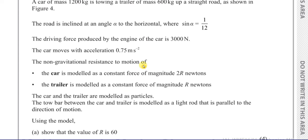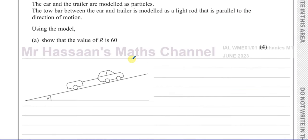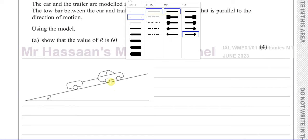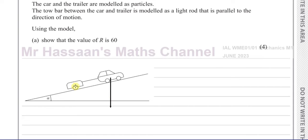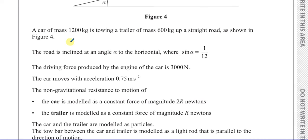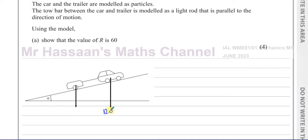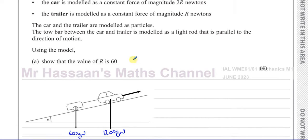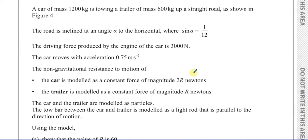Using the model, show that the value of R is 60. So now I'm going to put all the forces acting on this car and this trailer in this diagram. You have the weight acting vertically downwards on both of them. The weight of the car is 1200 kilograms, so that's 1200g newtons, and the trailer's is 600g newtons.